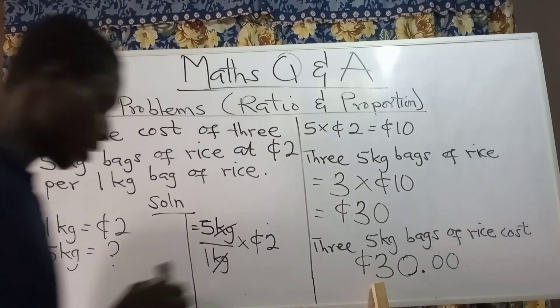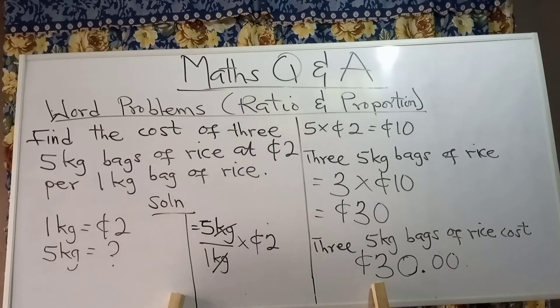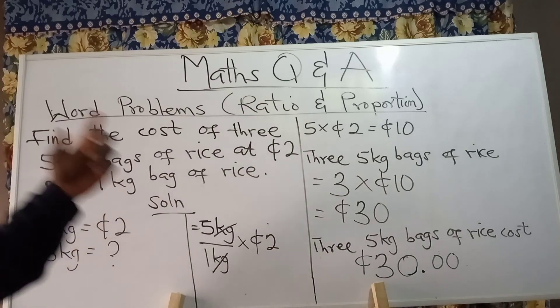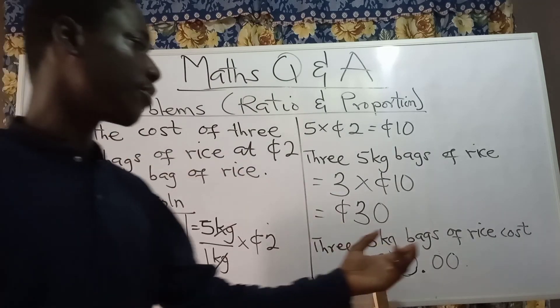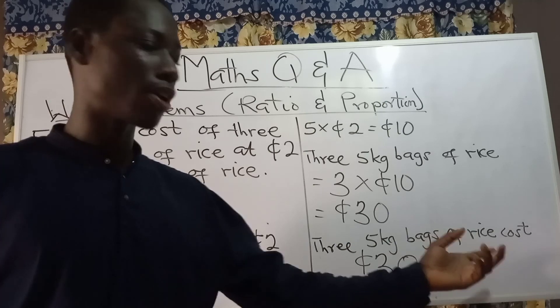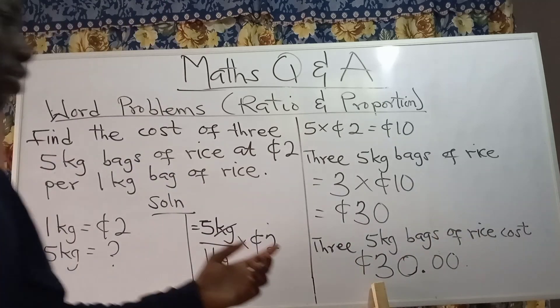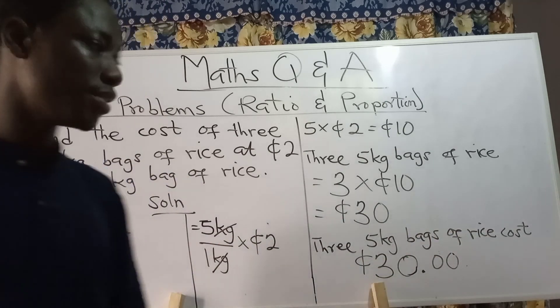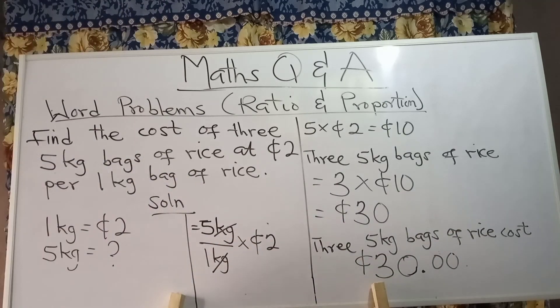Since this is a word problem question, after you are done you have to conclude. So the conclusion is: three five kg bags of rice costs thirty cities. That is the answer.